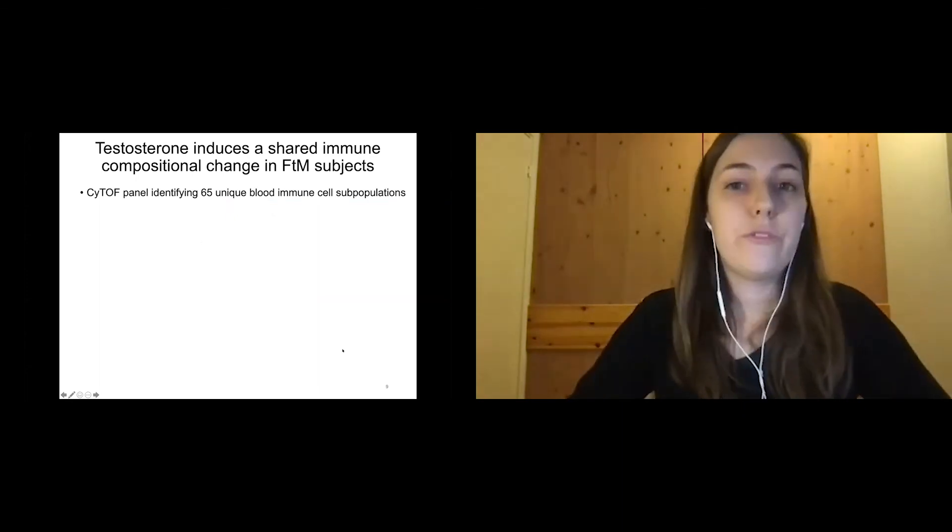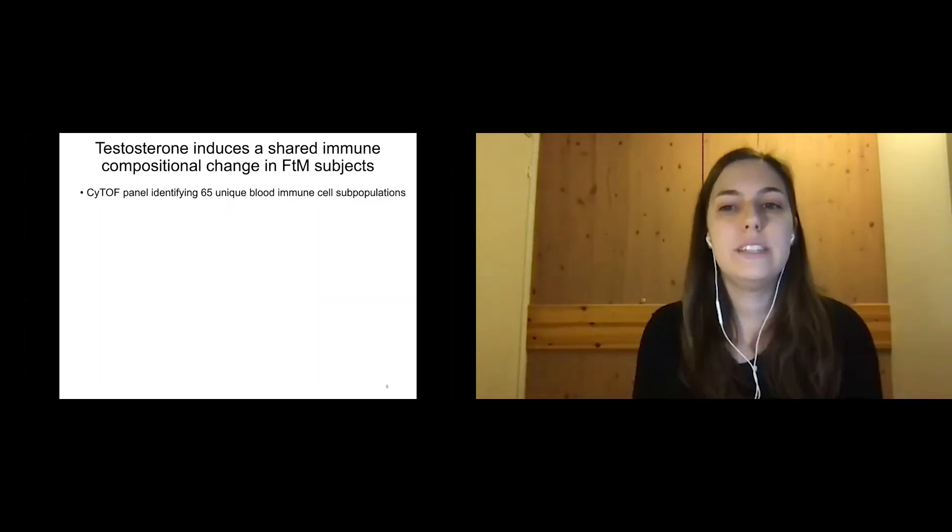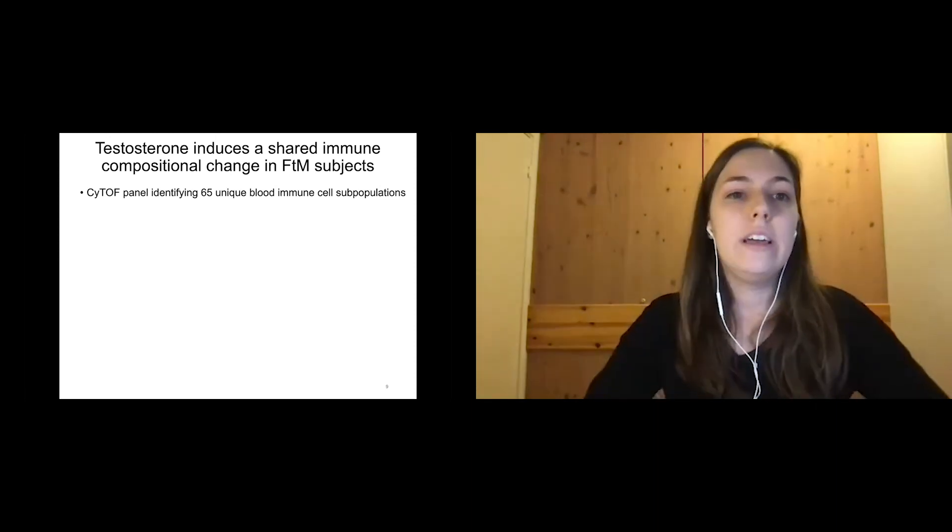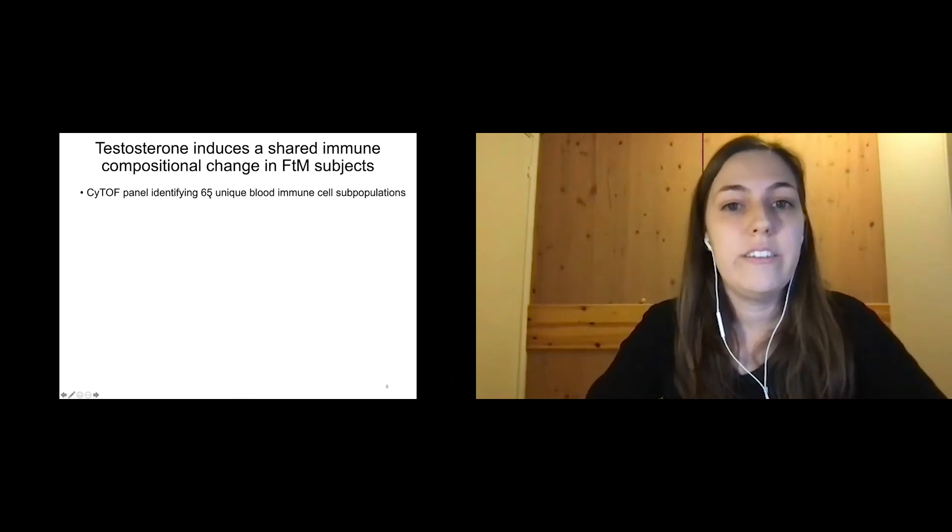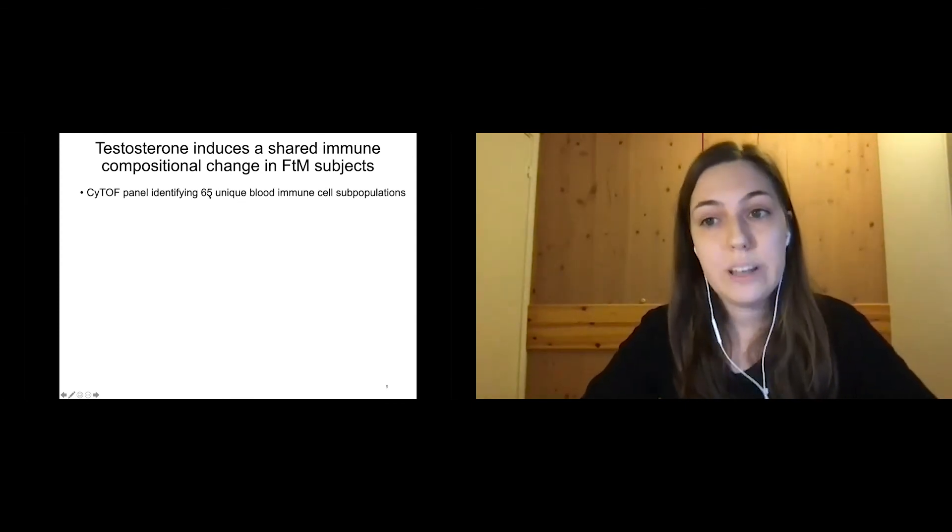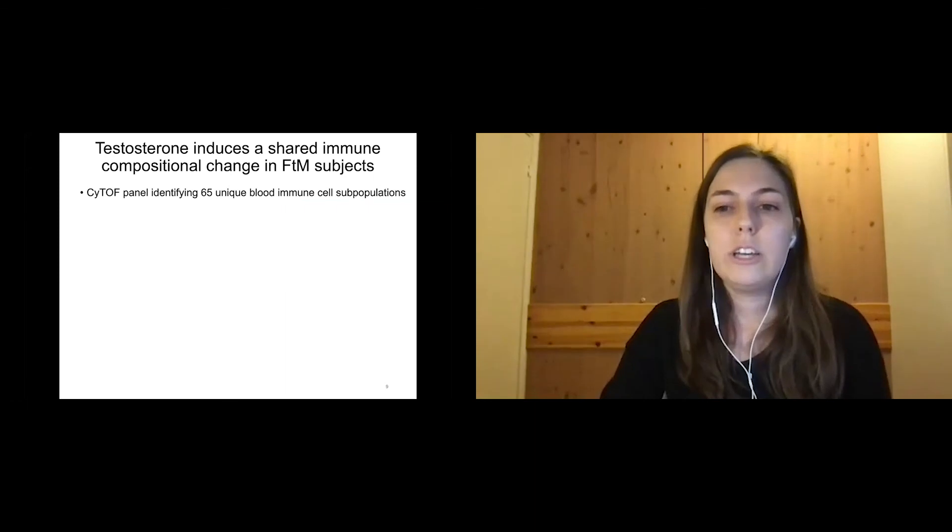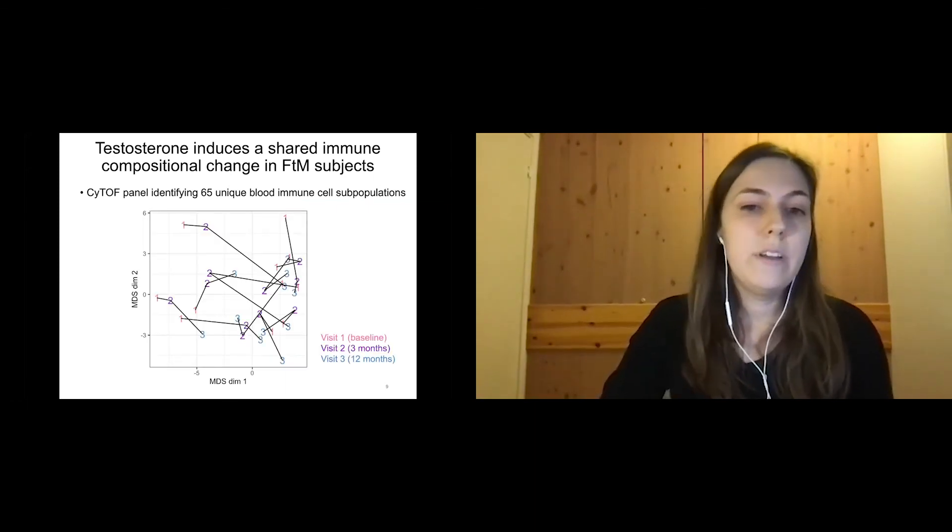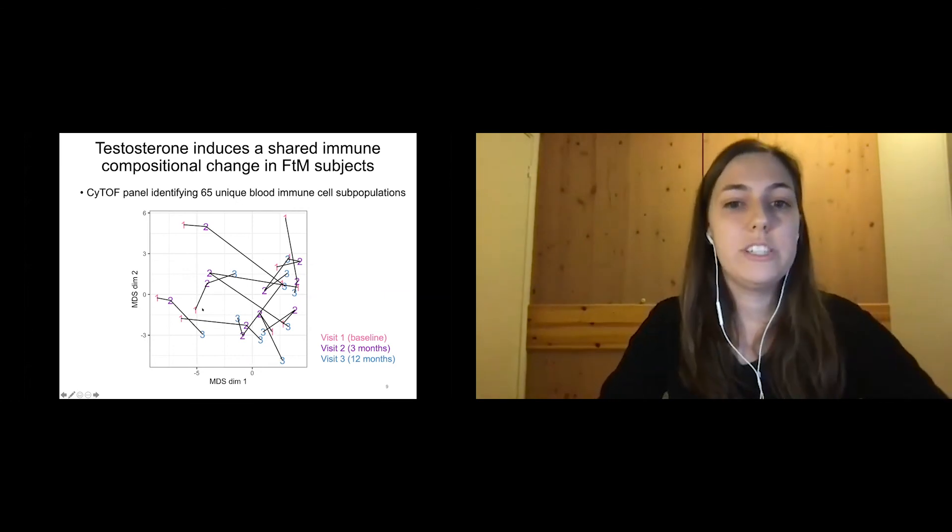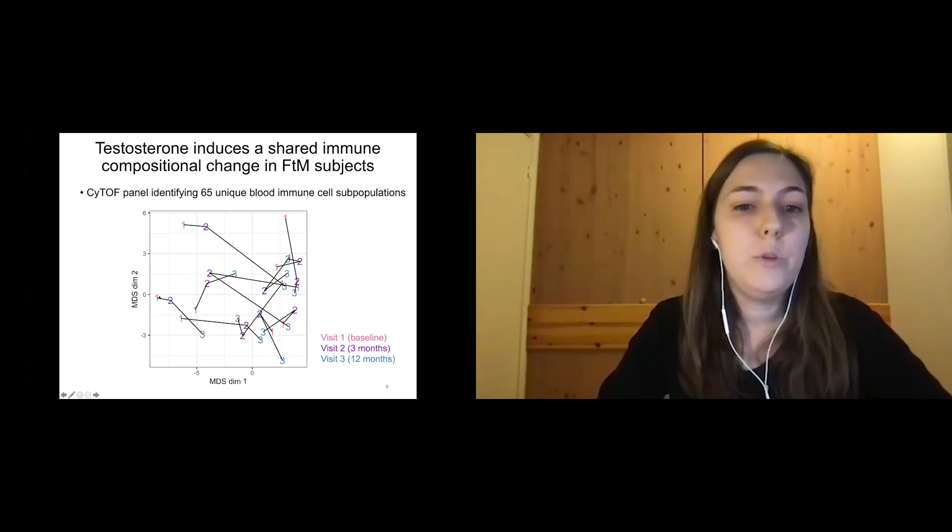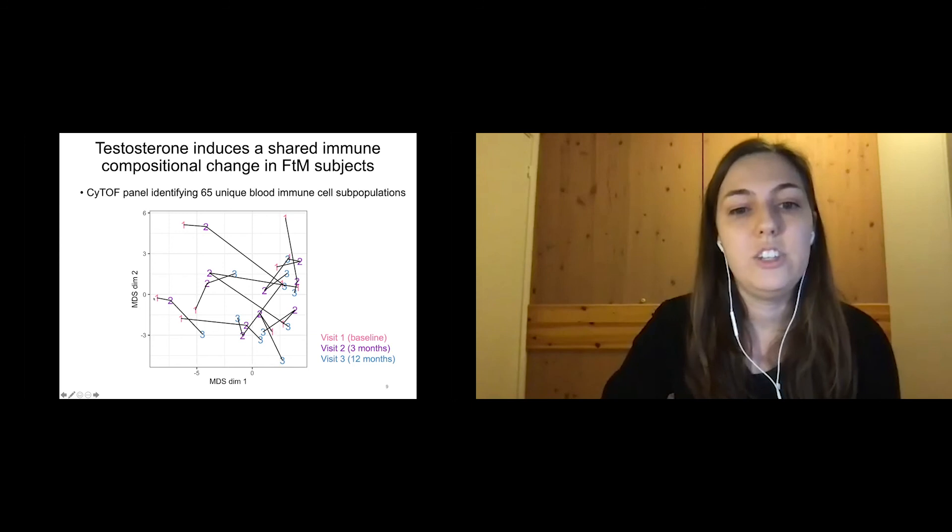To start, our first question was, is there compositional changes that are happening in immune populations in these subjects as they receive testosterone? We use a panel that could identify 65 different blood immune cell populations. We can look at these subjects over time in this MDS plot. What you're seeing here is the immune composition of these subjects that is changing over time. You have baseline, visit two and visit three after testosterone treatment.